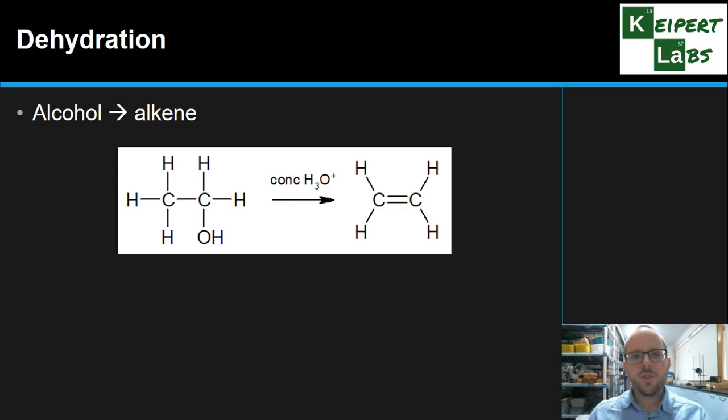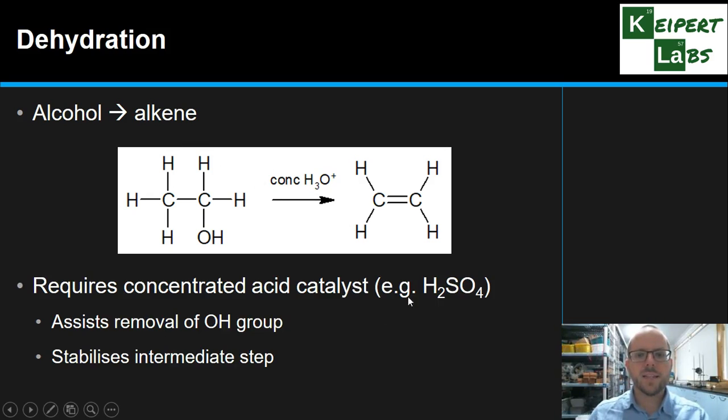Dehydration. So, dehydration is where we're taking an alcohol and we're turning it into an alkene. We've looked in the past at hydration reactions, when we're thinking about turning an alkene into an alcohol. So, we're looking at reversing that process using a concentrated acid catalyst.